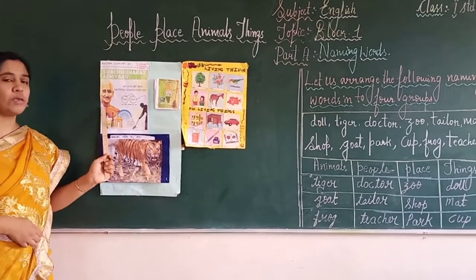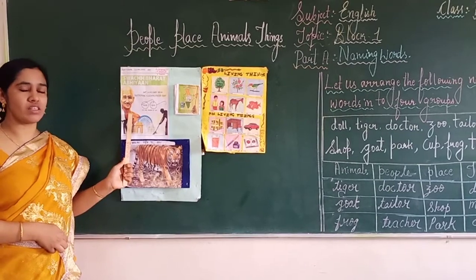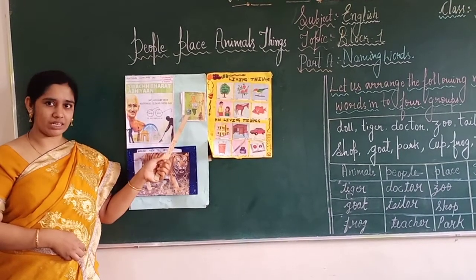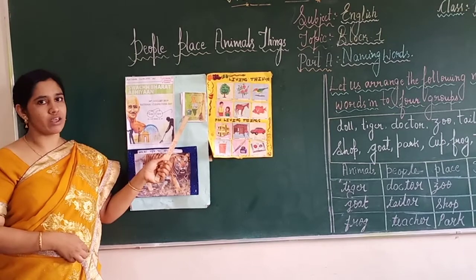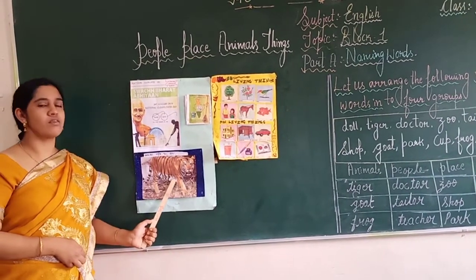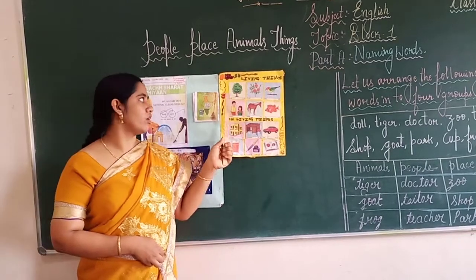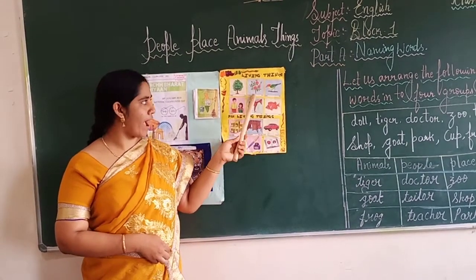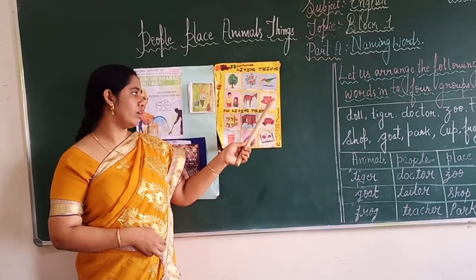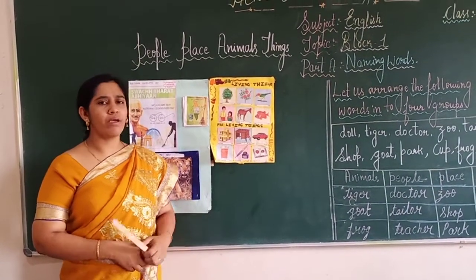Who is this? Mahatma Gandhi Ji. Mahatma Gandhi Ji is our father of the nation. Which is our country? India. India is our country. What is this? This is a tiger. Now look at the other picture. What is this? Tree, plant, bird, horse, fish, car, boats, and many more.